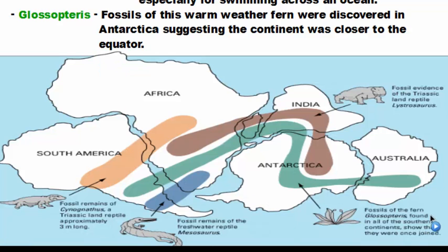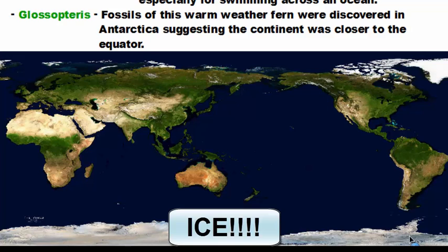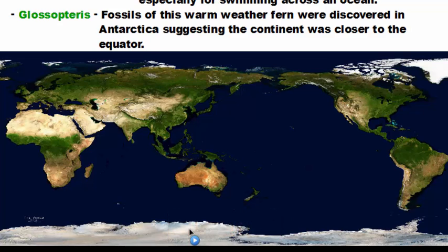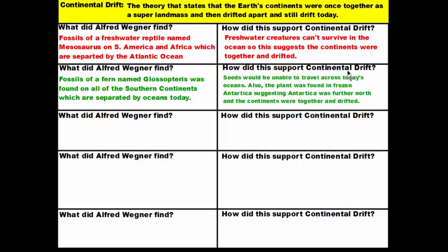In addition, ferns typically like warmer weather, yet Glossopteris was found in Antarctica. On today's map, Antarctica is all white — covered in ice, meaning it is frozen. The ground is no good for plants to grow, and the temperature is too cold for plants to survive. This suggests that Antarctica was once further north, and that the continents were together and then drifted apart. Glossopteris being found on all the southern continents — separated by oceans today — supports continental drift for two reasons: seeds couldn't travel across today's oceans, and the plant was found in frozen Antarctica, suggesting Antarctica must have moved.